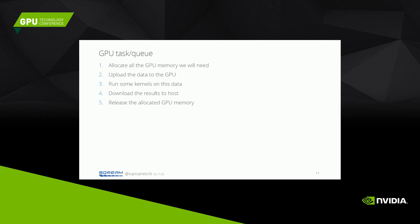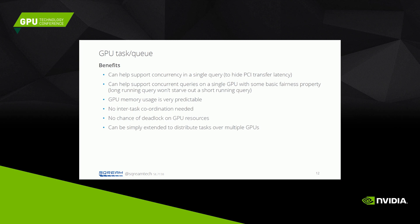The first optimization idea is to use a GPU task queue. This is a simple idea where we break our query processing up into tasks which go into a queue, and then a GPU worker thread loads tasks from that queue, runs them on the GPU, and passes them on to the next stage. We can use this to implement concurrency within a single query, overlap kernel execution and PCI transfers to hide latency, support multiple concurrent queries on a single GPU, and even allow one query to run on multiple GPUs.